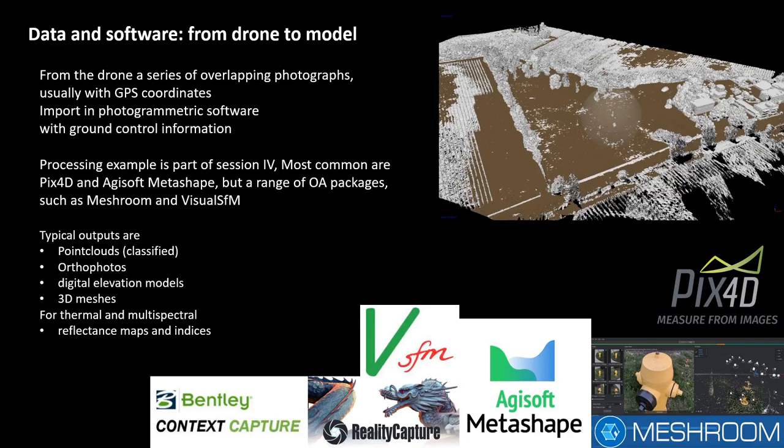The most common software packages are Pix4D and Agisoft Metashape, but there is also a range of open-access software such as Meshroom and Visual Structure from Motion. Most of these will give you typical outputs such as point clouds — either unclassified or classified. When classified, an algorithm has identified and differentiated buildings from trees, people, cars, and ground, which can be very useful if you want to use only the ground points. Orthophotos, digital elevation models, and 3D meshes are also typical outputs that you can inspect directly in 3D software.